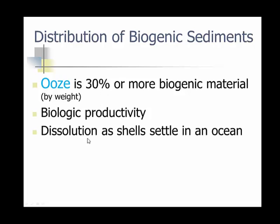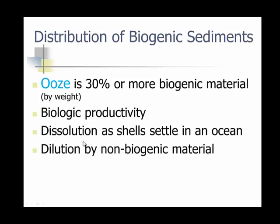Dissolution — if we get more fresh water into it, we may actually get some of these things to dissolve. The shells will actually settle into an ocean and dissolve if we have a dissolution-type environment. If we also get water moving in, we may get dilution by non-biologic material — other terrigenous material or something that's not biological.